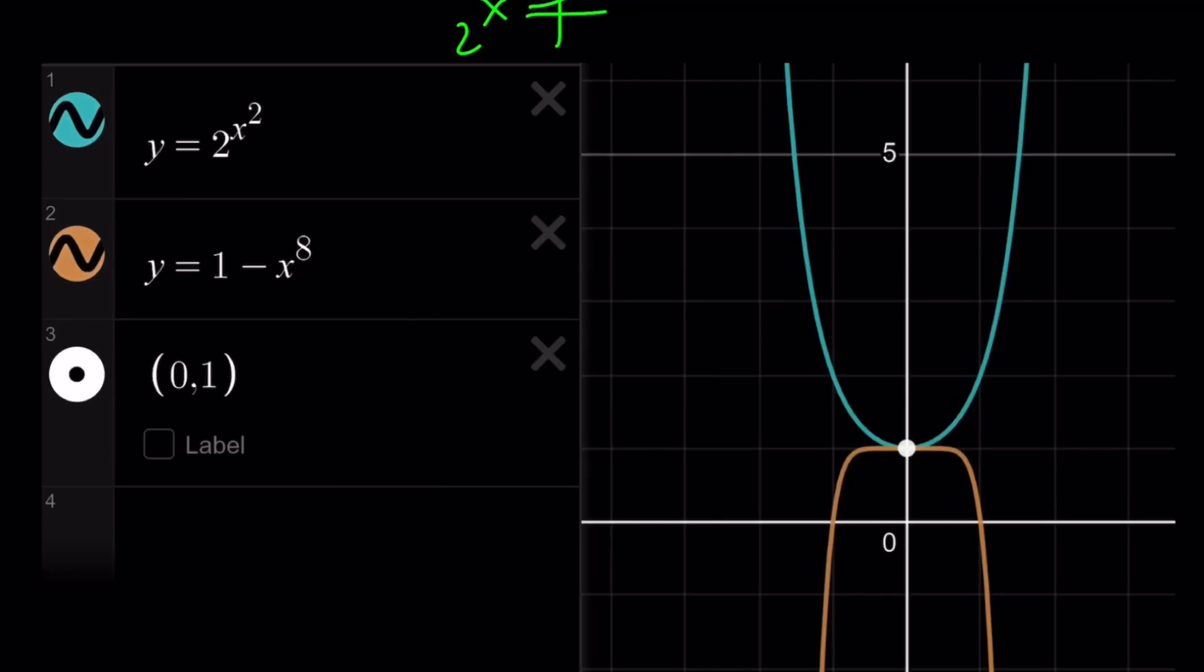1 minus x to the 8th is kind of like, it's pretty straight. It's not straight, but between negative 1 and positive 1, the y values change very slowly, and then all of a sudden, they're just going to shoot up, but in the negative direction.